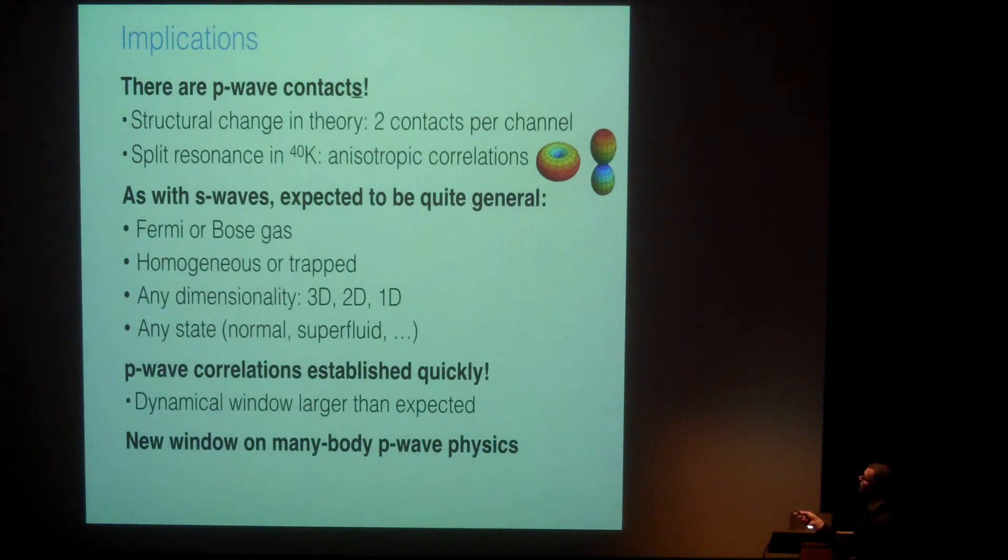And I can tell you more about this dynamics if you'd like but let me leave some room for discussion and conclude. The conclusion from this P-wave part of the talk is that there are P-wave contacts and this was really something that jumped out at us in the lab once we had an unbiased experimentalist in front of the apparatus. And again, this is a message for graduate students. It doesn't matter if it's your first year in the lab. You can still change the research direction of your group. Just make sure don't listen to your advisor. Because of the particular split resonance of potassium-40, when there were red and blue points, we were measuring contacts for two different anisotropies. And as with S-waves, you would expect this P-wave contact theory to be quite general, to apply to any quantum statistics, dimensionality, or state. And a surprise was that the dynamical window of these correlations was larger than expected.